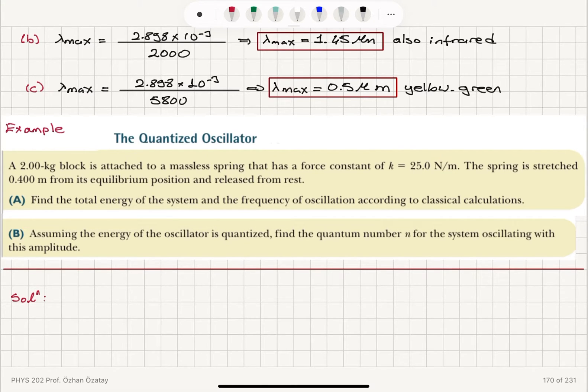Another example, the quantized oscillator. A 2 kilogram block is attached to a massless spring that has a force constant of k equals 25 newtons per meter. The spring is stretched 0.4 meters from its equilibrium position and released from rest. Part A, find the total energy of the system and the frequency of the oscillation according to classical calculations.